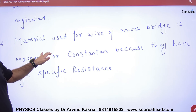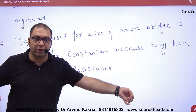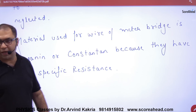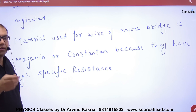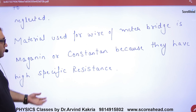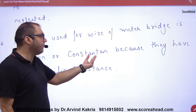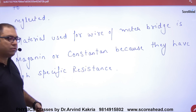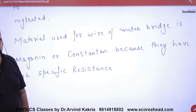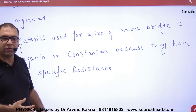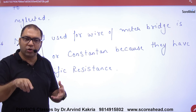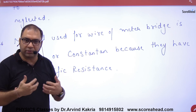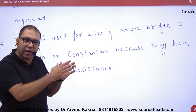The wire used in the meter bridge is made of a special material with high specific resistance, such as manganin or nichrome. Because ρ (resistivity) is very high, the resistance R of the wire is measurable and significant. These are the key points to remember about the meter bridge.